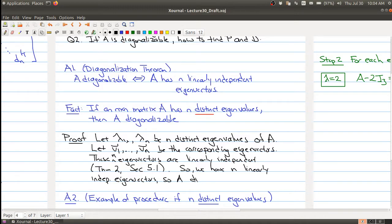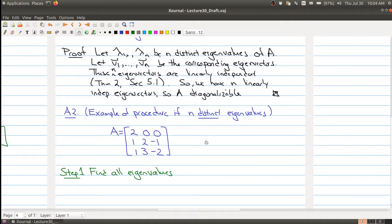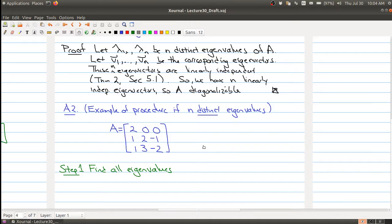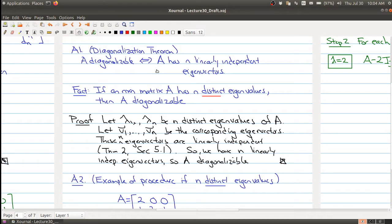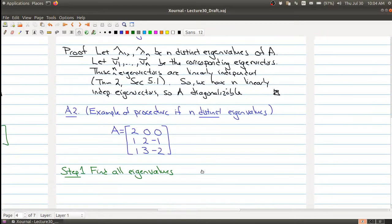And because we have n linearly independent eigenvectors, A is diagonalizable. So that finishes the proof of that. So that means that whenever we're trying to do an example, if we come up with n distinct eigenvalues of an n by n matrix, then yes, we can find a diagonalization. So I want to give you a procedure now. There's many steps here, so I'm actually going to take a pause halfway through just so this particular video doesn't get too long, and we'll finish it up in the last part.